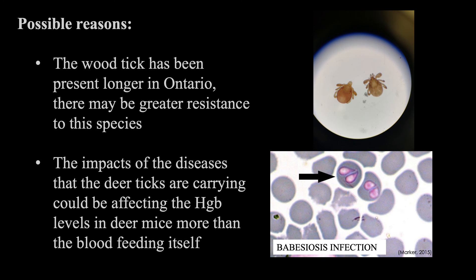The reason behind why deer ticks may play a significant role in the hematology of deer mice in Long Point, despite their low intensity, could be because wood ticks have been established longer in this area, so the mice could have a greater resistance to wood ticks compared to deer ticks. Another factor could be that the diseases that deer ticks carry could be affecting hemoglobin levels in deer mice more than the blood feeding itself. One such disease that deer ticks can carry is babesiosis, which does in fact lower hemoglobin levels and could be the actual effect we are seeing. Because zoonotic diseases were not tested in this project, this cannot be determined unless further research is conducted.